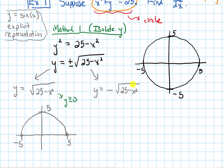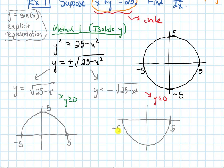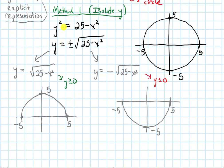If I have the negative sign in front, now my y values are going to be less than or equal to 0, corresponding to the bottom half of the semicircle. So our derivative will depend on where our point (x, y) is — whether it's on the top half or the bottom half of the circle — because that will dictate which formula I'm going to use.